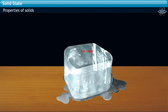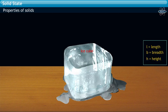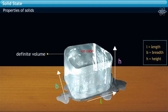For example, a solid ice shown has a cubical shape with dimensions: length, breadth, and height. That is, the ice cube has a specific volume.